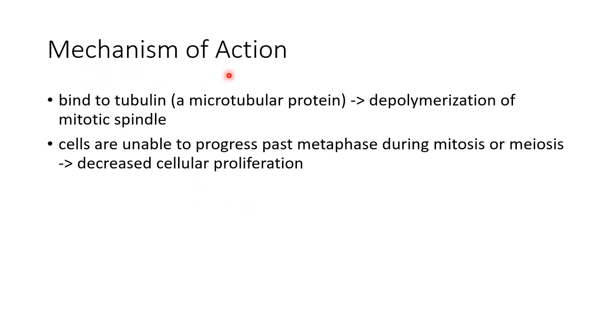The mechanism of action of Vinca alkaloids: vincristine and vinblastine bind to tubulin, a microtubular protein, leading to depolymerization of mitotic spindle. Because of this, cells are unable to progress past metaphase during mitosis. This leads to decreased cellular proliferation.